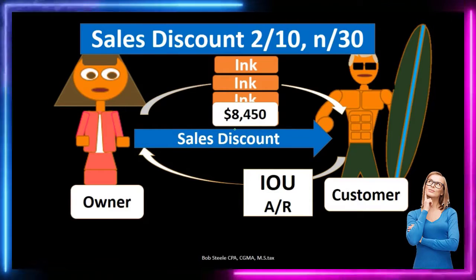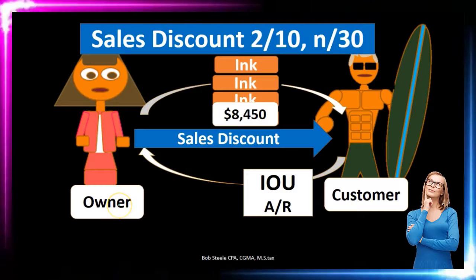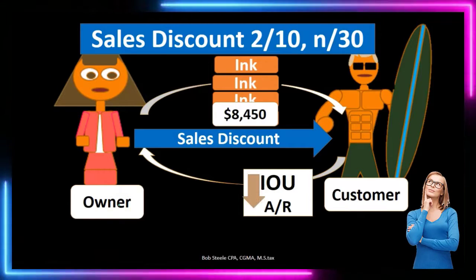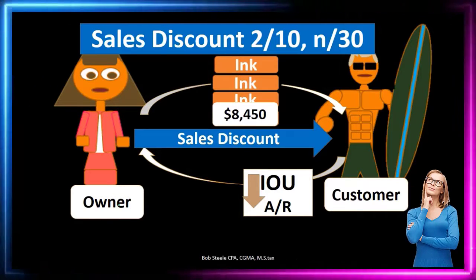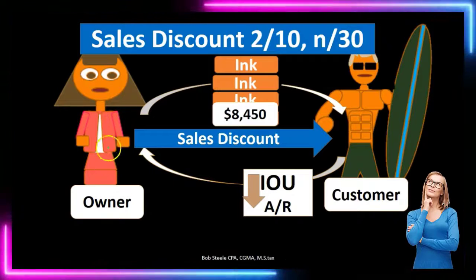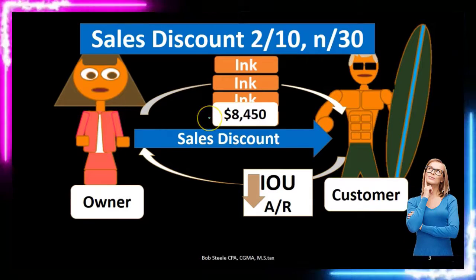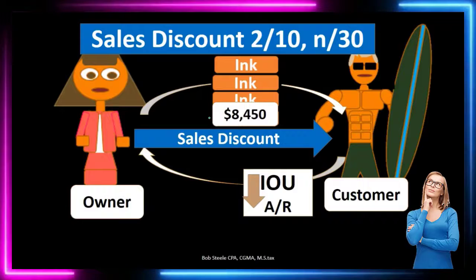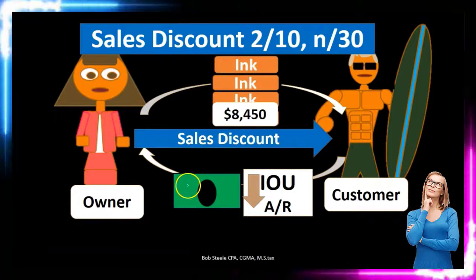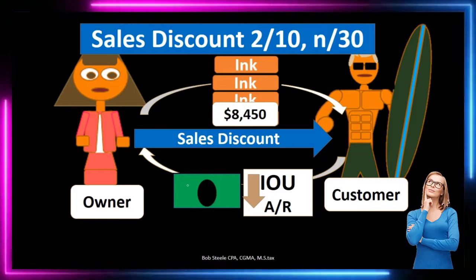That would be the sales discount granted from the seller — the owner in this case — to the customer, the purchaser. This would decrease the receivable, because remember, we put the receivable on the books at the full price. We would then have to reduce the receivable, which would reduce the amount of cash that we would receive from the customer.